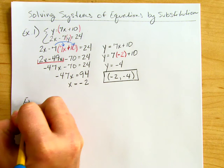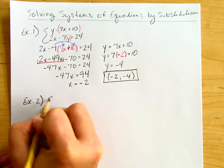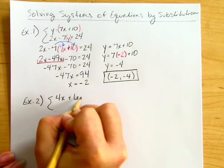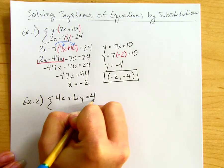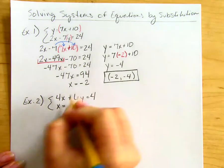Let's do one more example. Example 2: this time the system is 4x + 6y = 4, and x = 4.